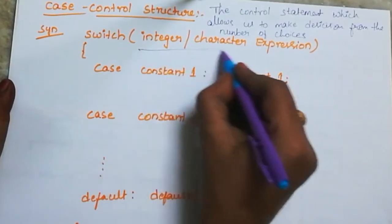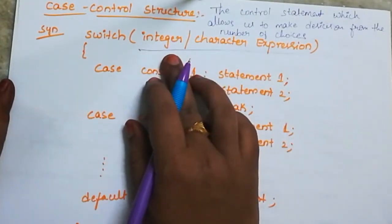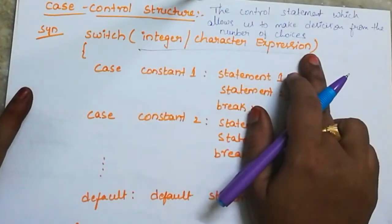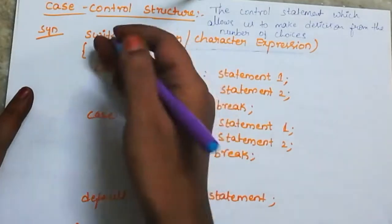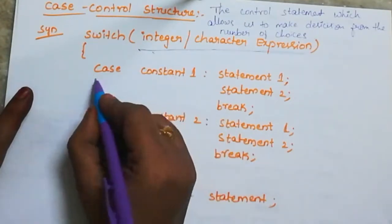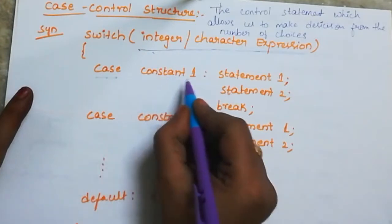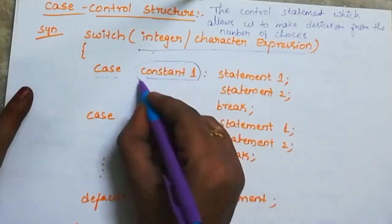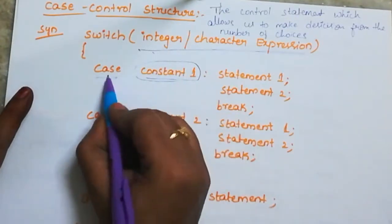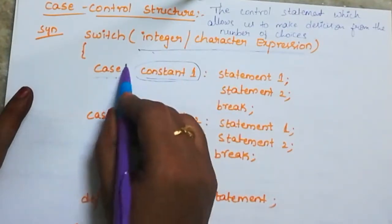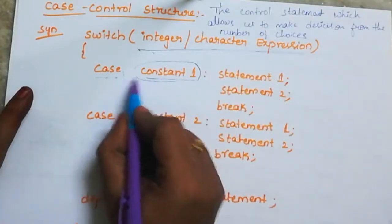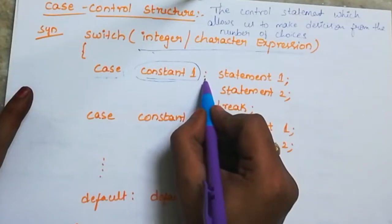What is the syntax of switch? In the syntax, we give one input — that is an integer or character expression. We write the switch keyword, then within parentheses we pass the input. After that, we have the 'case' keyword followed by a space and a constant value. The constant can be an integer or character. A colon is compulsory after the constant.